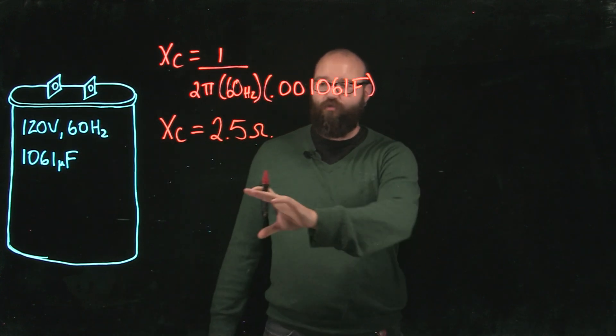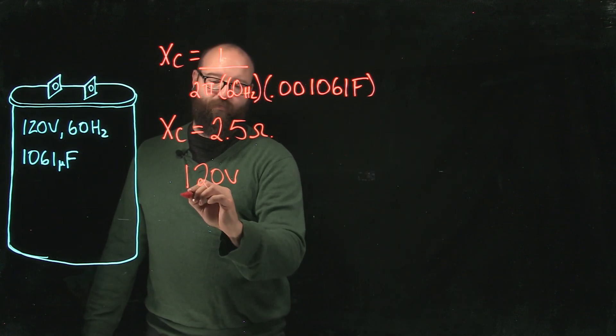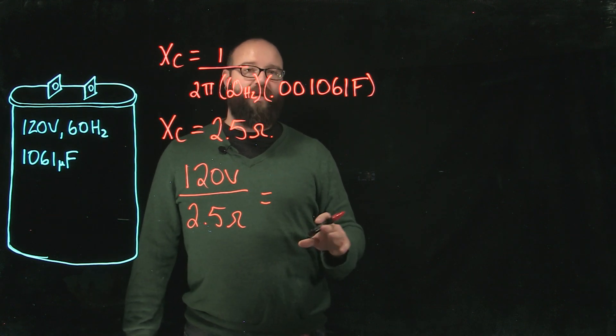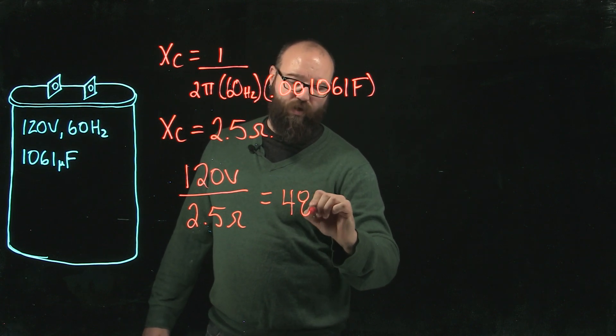With this number I can use Ohm's law which we have 120 volts divided by our capacitive reactance. We should get the rated current of our capacitor. It should be somewhere around 48 amps.